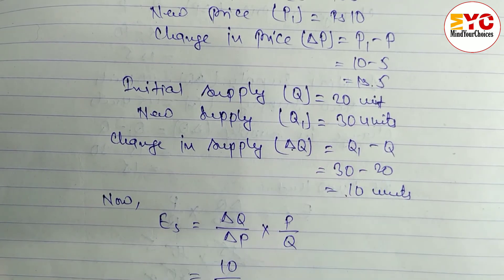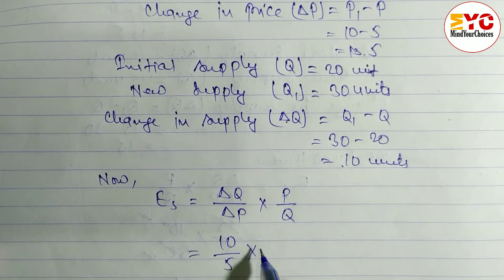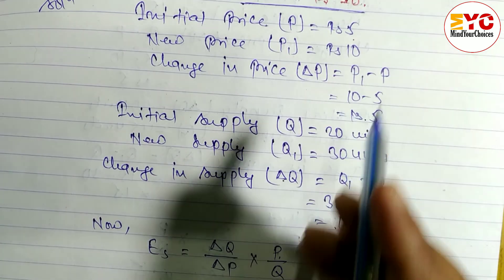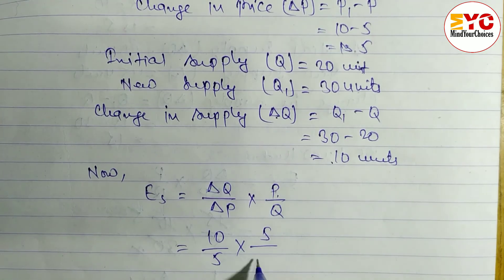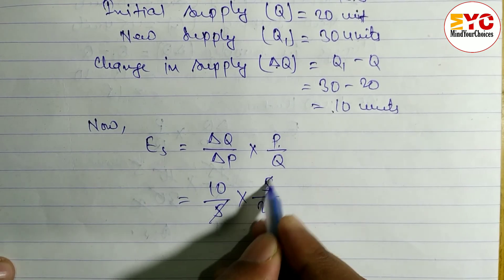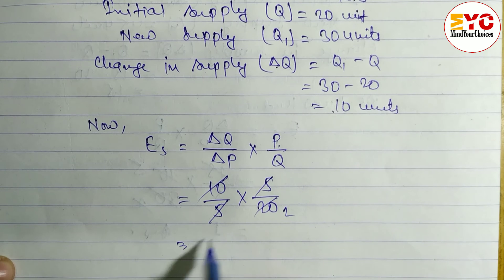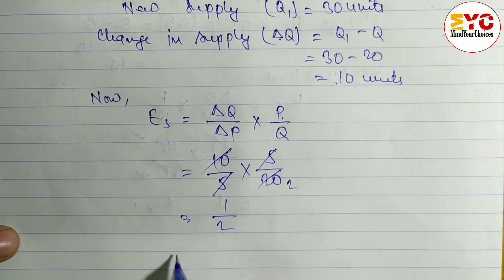So we have to write here 5 × P, which is equal to initial price 5, and initial quantity 20. Now we calculate: 10 divided by 20 gives us 1/2, which is 0.5.